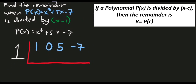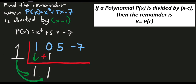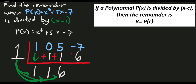Bring down the first number: 1. Multiply by divisor 1: 1 times 1 equals 1. Add: 0 plus 1 equals 1. Multiply again: 1 times 1 equals 1. Add: 5 plus 1 equals 6. Multiply: 6 times 1 equals 6. Add: negative 7 plus 6 equals negative 1. So the remainder using synthetic division is negative 1.